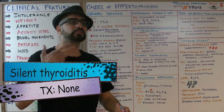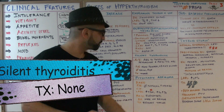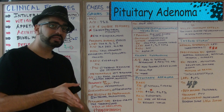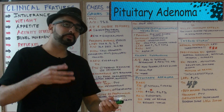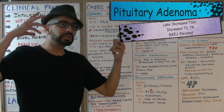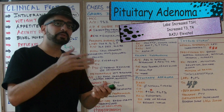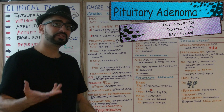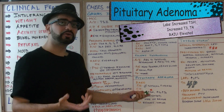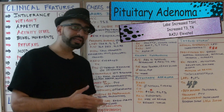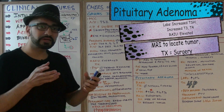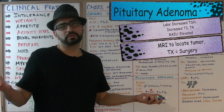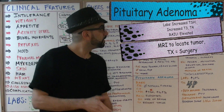Pituitary adenoma is the only condition where TSH levels are actually high. The problem is in the brain — a pituitary adenoma causes increased TSH release, leading to elevated T3 and T4. It's a rare condition; radioactive iodine uptake will also be elevated. Treatment: locate the adenoma with a brain MRI, then surgically remove the tumor.